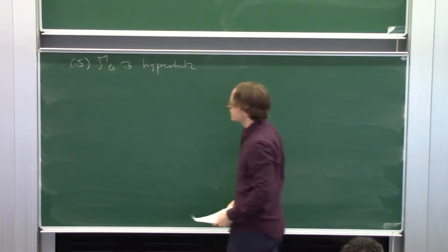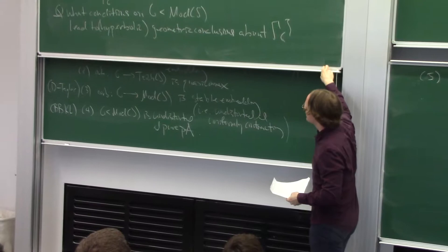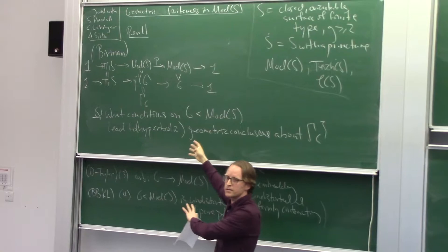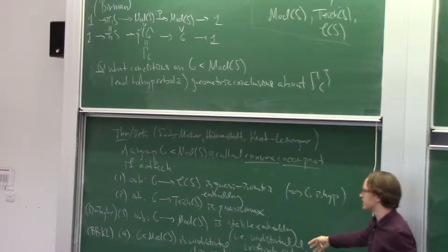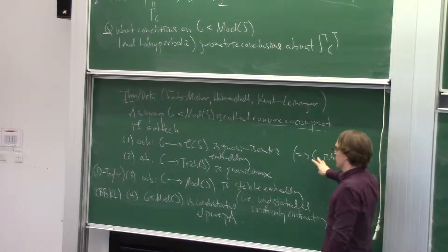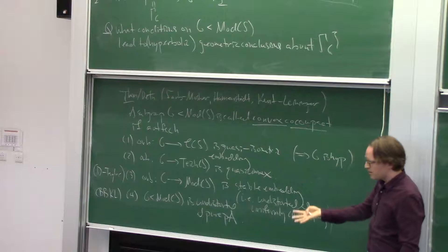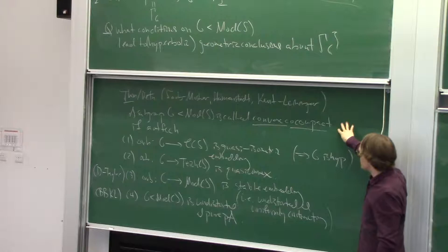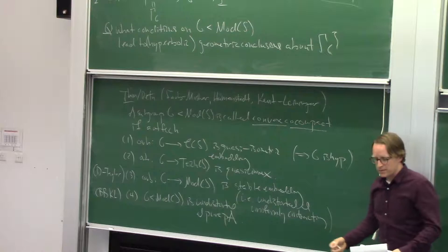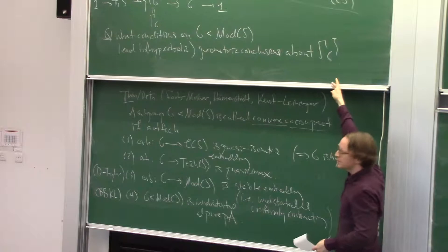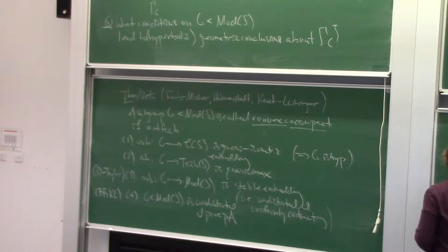My goal for today's talk is to have a broad conversation about trying to generalize this picture. What we're really interested in is: what conditions can I put on a group that give some sort of hyperbolic conclusions about the geometry of the extension group? In the case where we want the extension group to be purely hyperbolic, we have characterizations. Other characterizations involve looking at the limit set in Thurston's compactification of Teichmüller space — this gives the convex cocompactness name, motivated by the original Kleinian setting. Our notion of geometric finiteness should similarly be motivated from the Kleinian setting.